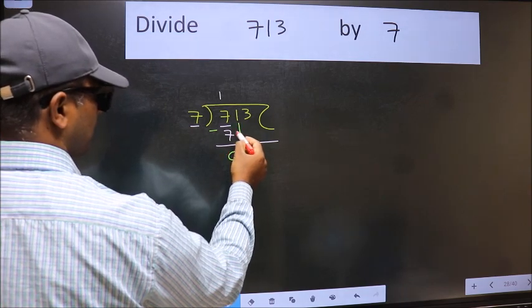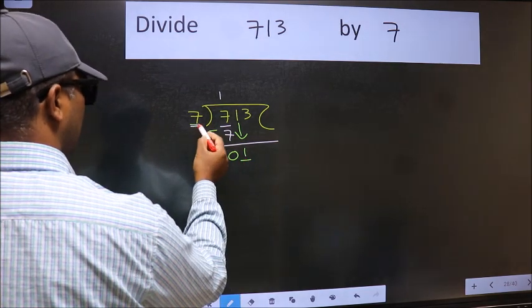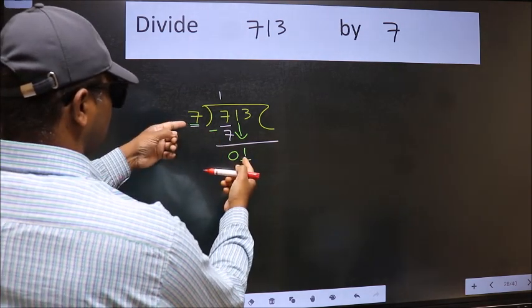After this, bring down the beside number. So 1 down. Now here we have 1 and here 7. 1 is smaller than 7.